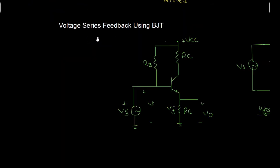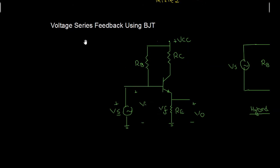Next is voltage series feedback using the BJT, the bipolar junction transistor. At the output we have the voltage and at the input we also have the voltage, so this circuit is used for voltage amplification. The output is taken from the emitter terminal and the input is applied to the base terminal — this is the common collector BJT configuration.